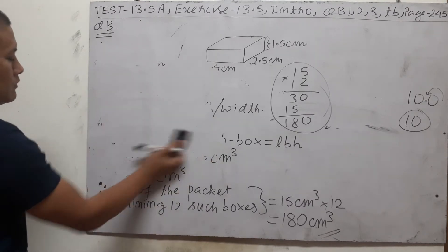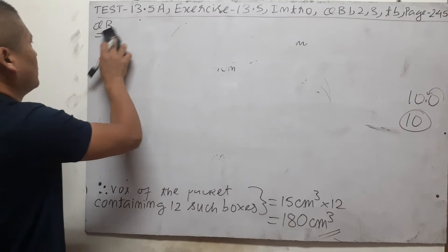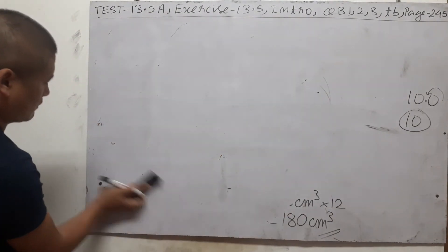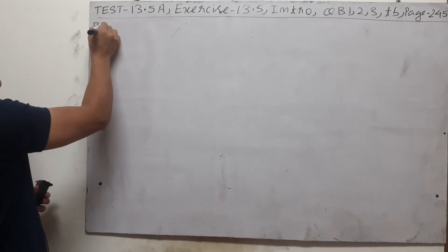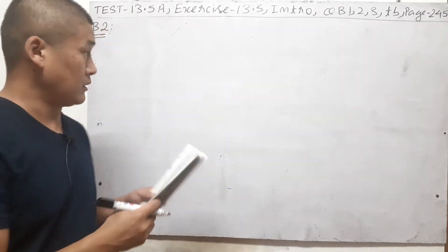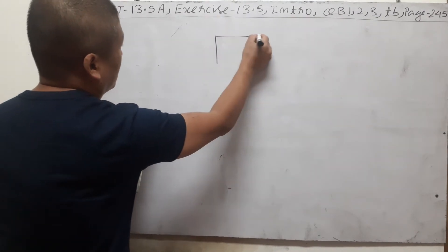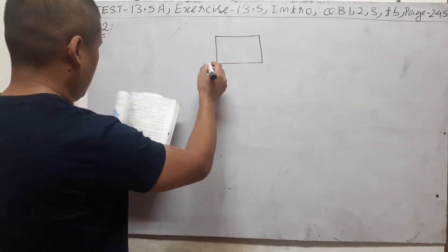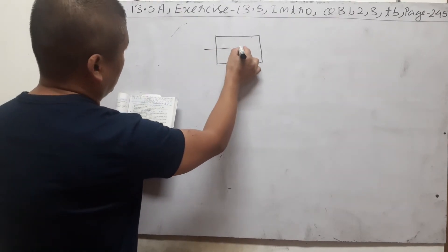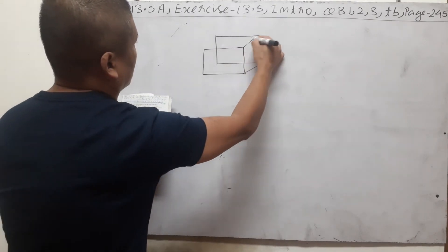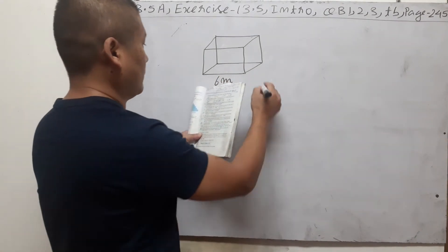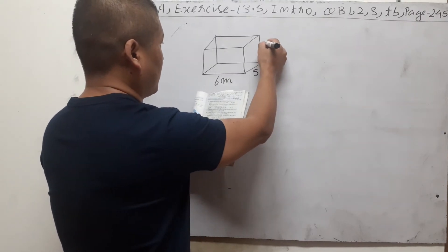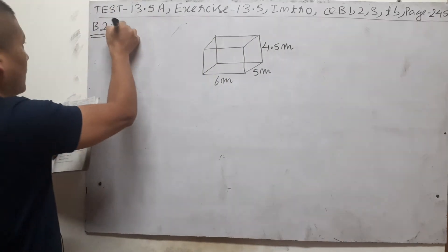Let us go to B2. The question: a cuboidal water tank is 6 meters long, 5 meters wide, and 4.5 meters deep. Let's draw the water tank — a cuboid — with dimensions 6 meters (length), 5 meters (width), and 4.5 meters (depth).